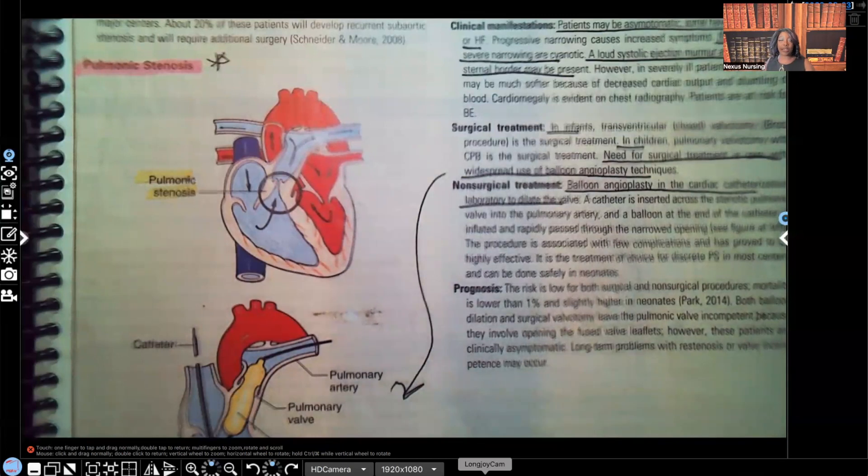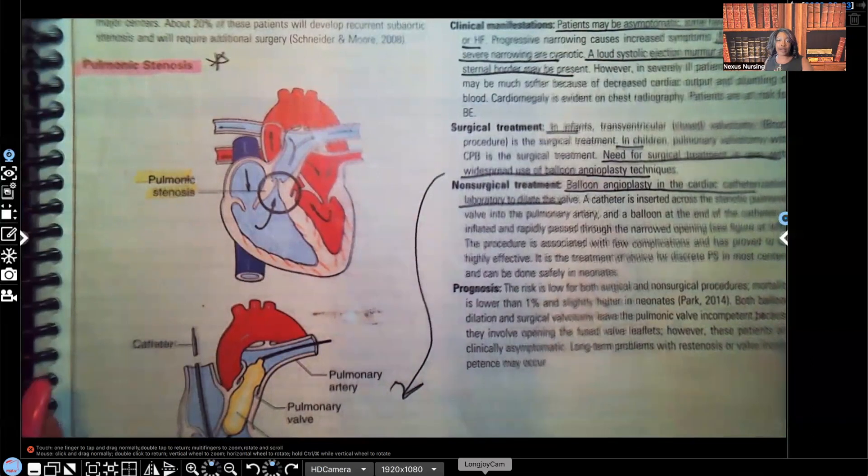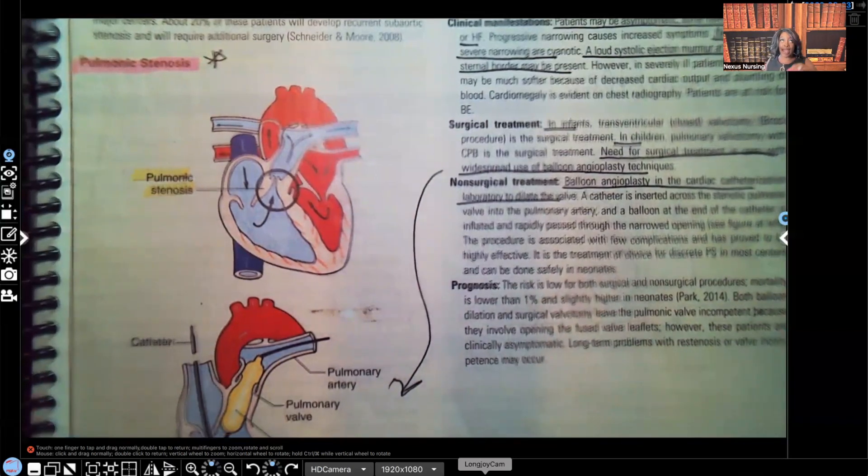With pulmonic stenosis, you don't expect to see the patient turning blue, but you do expect to see signs and symptoms of heart failure. This is actually the last part of the series for acyanotic heart failure cardiovascular congenital disorders. The next group of videos I'm going to do will cover the cyanotic disorders.